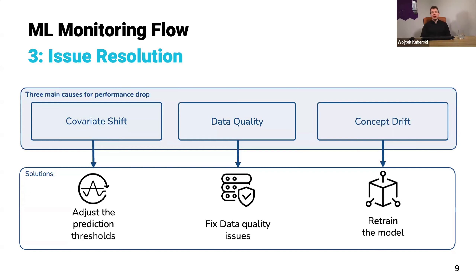Another issue — probably the one that happens most often — is data quality. We'll use our toolbox to detect data quality issues and then work with data engineers, people who collect data, or machine operators to fix them. The last cause is concept drift: a change in the pattern or relationship between model inputs and the targets. If that happens, we need to retrain the model, since what the model does is capture this relationship between features and labels, and once that changes, we simply retrain once we gather enough data.